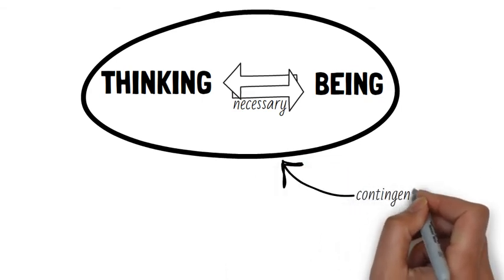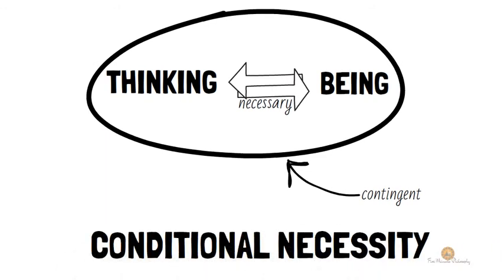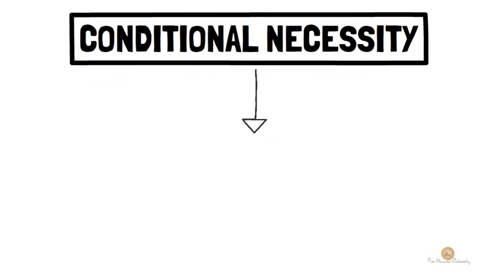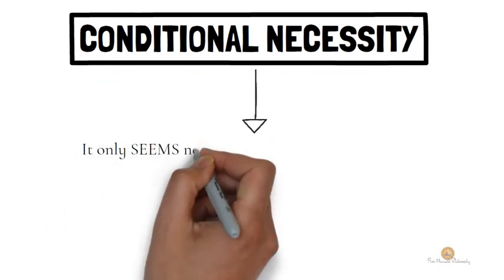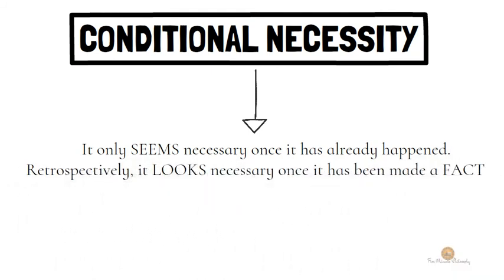The correlation only seems to be necessary. It is a conditional necessity. The fact of correlation has become necessary retroactively. It only seems necessary once it has already happened. Retrospectively, it looks necessary once it has been made a fact.